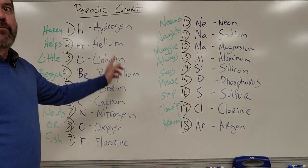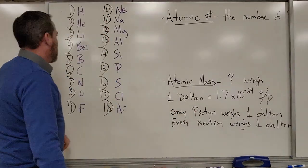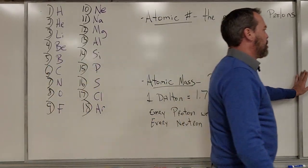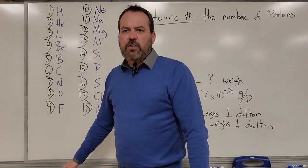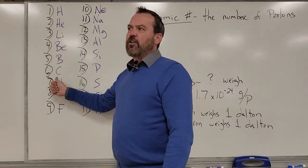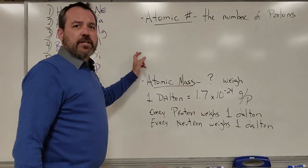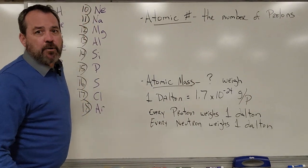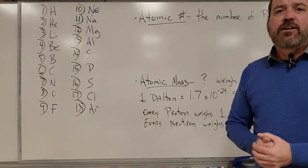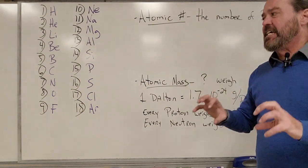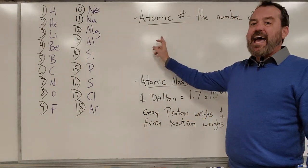Now that we can list elements 1 through 18 in order with their chemical symbols, we can get into some of the more complicated stuff. Starting with the atomic number: the atomic number is the number of protons. It is a steadfast number — you can never gain or lose a proton. That number is steady, and it's what makes each element unique.